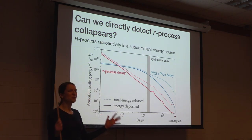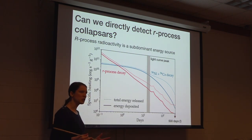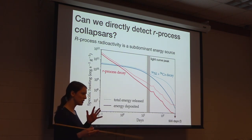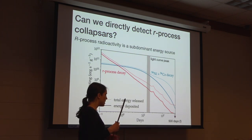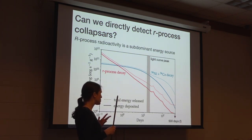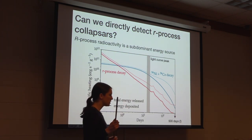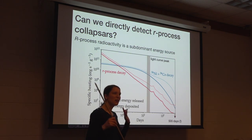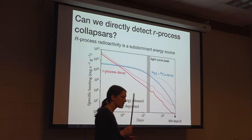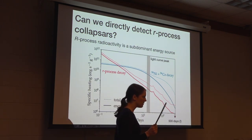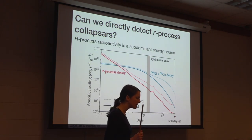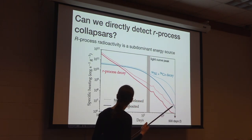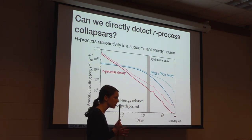Being more of a radiation transport and transient astronomy phenomenologist, my interest is not just in studying this from a theoretical perspective. I'm also interested in knowing whether we can directly detect signs of the R-process in collapsars, just as we do for neutron star mergers.